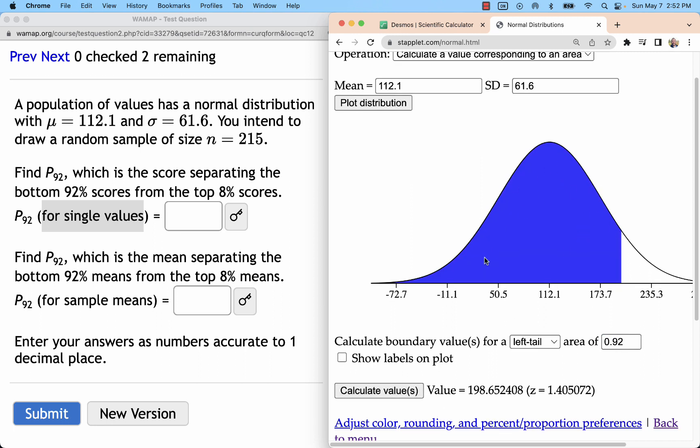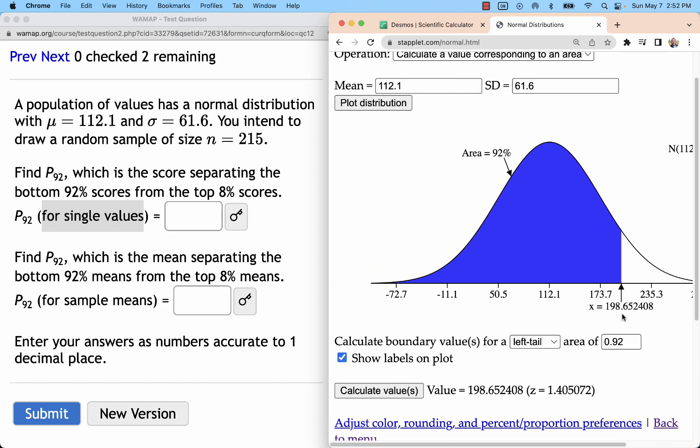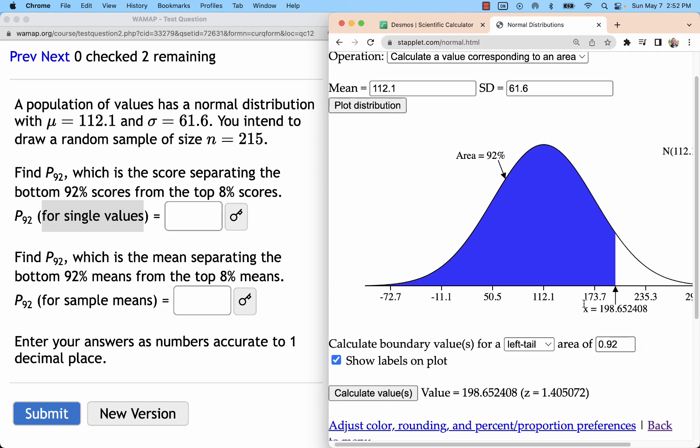That's shading the left 92% and giving me a value here which I can show on the graph of 198.7, approximately with one decimal place.